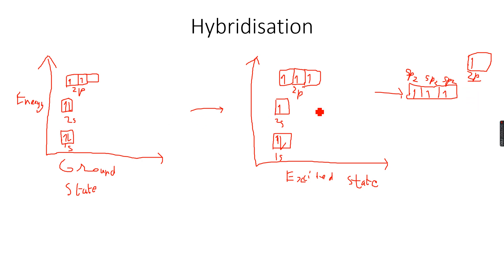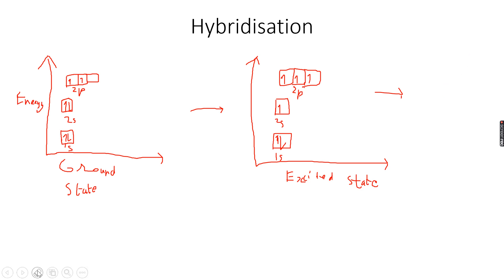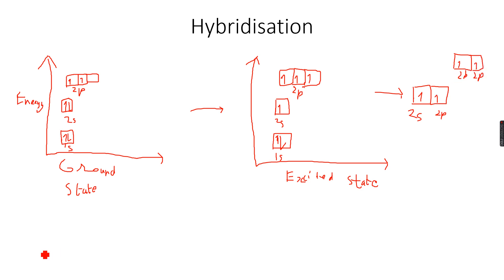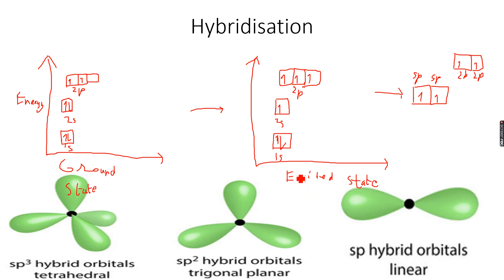The remaining third 2p orbital stays as a 2p orbital — this is how we get the carbon-carbon double bond. We can also have the 2s combining with just one of the 2p orbitals, leaving the other two 2p orbitals alone. Those two left-behind orbitals remain 2p, while the combined s and p become two sp hybridized orbitals.